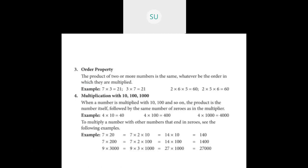Then 4 into 1000: write 4 with three zeros — 4000. So this is multiplication with 10, 100, and 1000. These are the four properties of multiplication that we learnt.